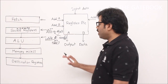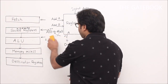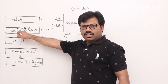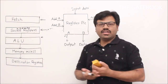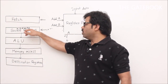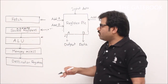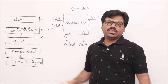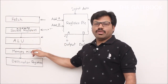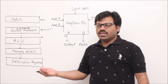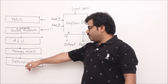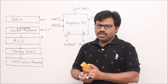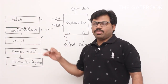Once you do memory access and get the data, in the next stage we store the result into the destination register. So now you have data which has to be stored into R1, and that we do in the fifth stage. To summarize: first we fetch, then we understand the instruction and read the required register values, then we do arithmetic in the ALU stage, then memory access if needed, and finally we store the result back into registers.